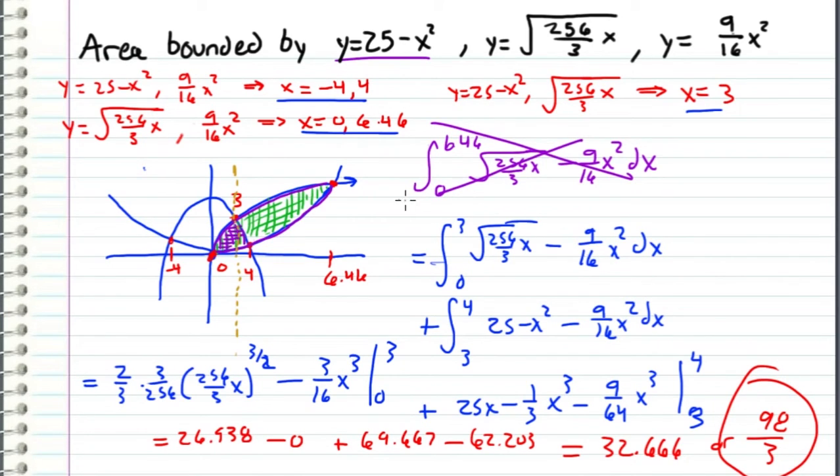And this gives us 32.666, or 98 thirds. And just for completion, if you were to consider the entire shaded region, including this green area, then you would have evaluated the integral that we ended up crossing out. But this would have came out to be 50.56.